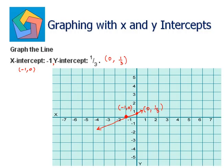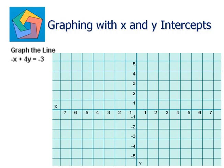Next problem: graph the line negative x plus 4y is equal to negative 3. First, we need to find the x-intercept and y-intercept for this line.